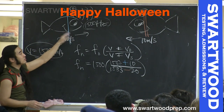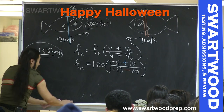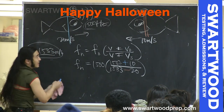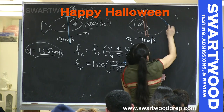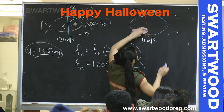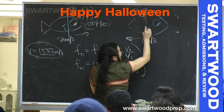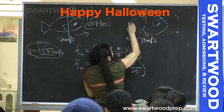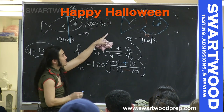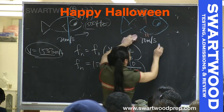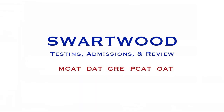Now let's try a different scenario. Everything is the same except the second submarine was actually going the other way — so it's now going away instead of toward. Everything is the same but that direction flips.